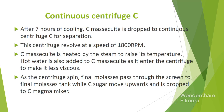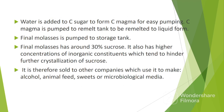Let's see how the formed crystals are separated from the mother liquor. After 7 hours of cooling, C masecuite is dropped to continuous centrifuge C for separation. This centrifuge revolves at a speed of around 1800 revolutions per minute. C masecuite is first heated by steam to raise its temperature. Hot water is also added to C masecuite as it enters the centrifuge to make it less viscous. As the centrifuge spins, final molasses passes through the screen to the final molasses tank, while C sugar moves upward and is dropped to the C magma mixer. Water is added to C sugar to form C magma for easy pumping. C magma is pumped to the remelt tank to be remelted to liquid form. The solution formed is taken to pan A to raise the purity of syrup.